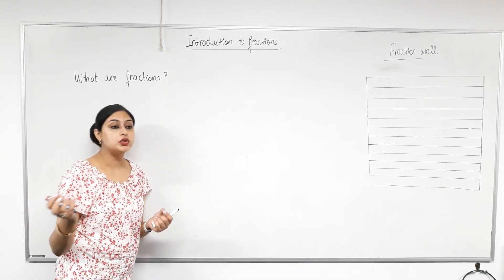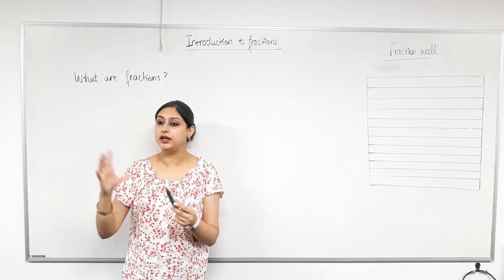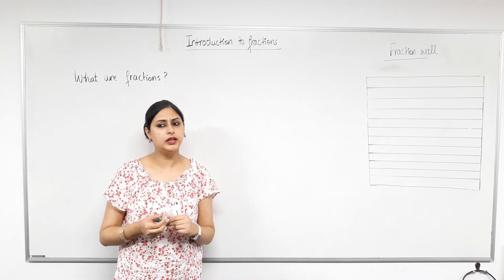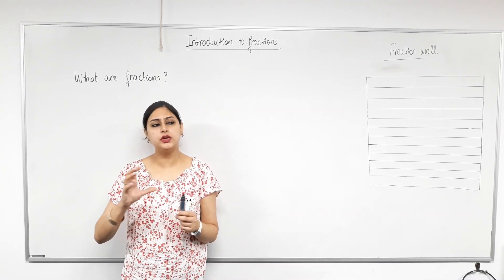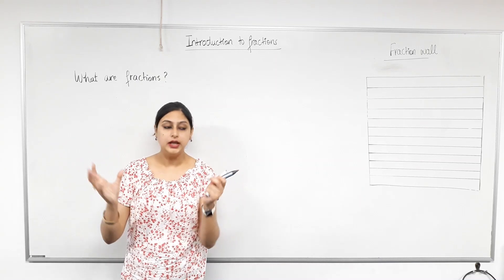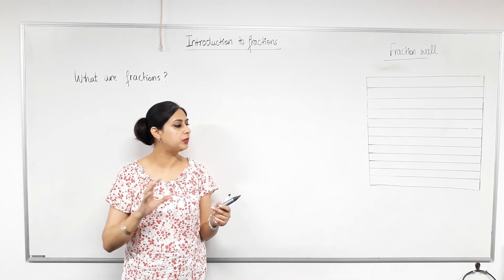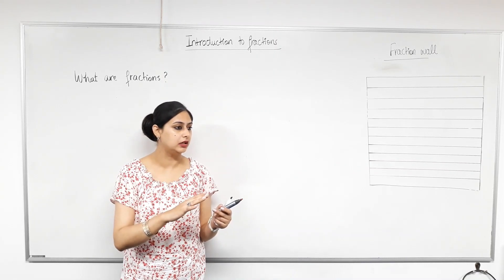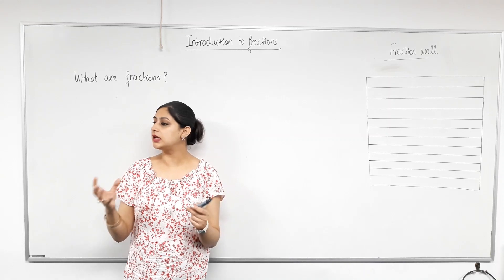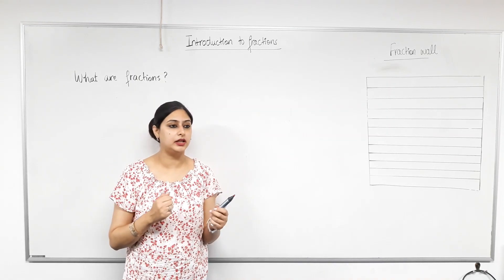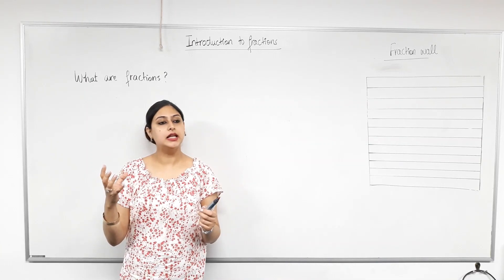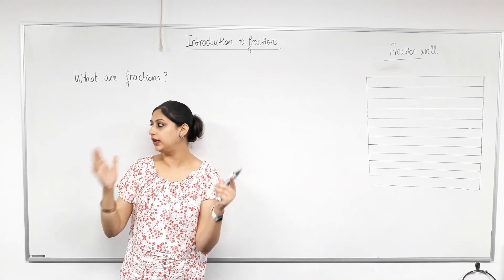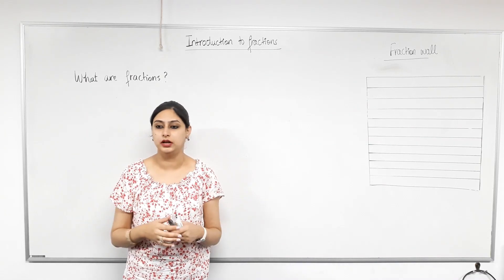That's correct. Yes, that a whole number is being divided evenly into separate parts. Exactly. So a number, a whole number has been divided into parts. Right? So are fractions always less than one because we're dividing a whole into parts? Think about this one. Are fractions always less than one?